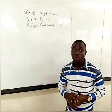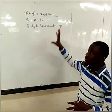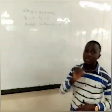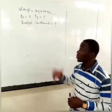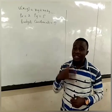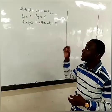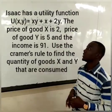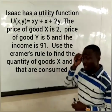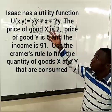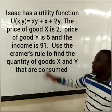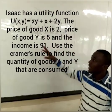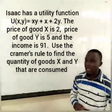Today we are faced with a word problem and I've just written out the details, but the whole question will be posted on your screen for you to watch. It says that Isaac has a utility function of u(x, y) equal to xy plus x plus 2y. Isaac consumes two goods x and y, the price of x is 2, the price of y is 5, and income is given by 91.